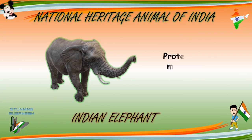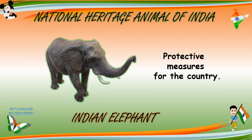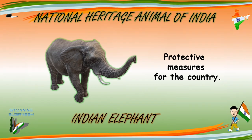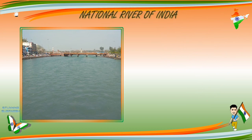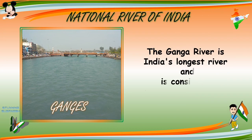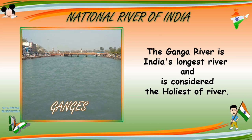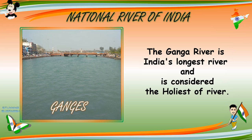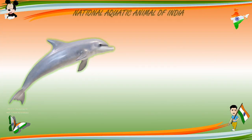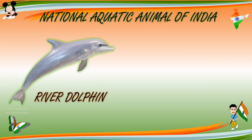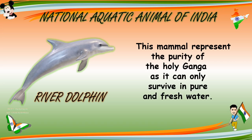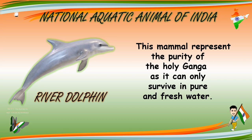National Heritage Animal of India — Indian Elephant, noted for protective measures for the country. National River of India — Ganges. The Ganga River is India's longest river and is considered the holiest of rivers. National Aquatic Animal of India — River Dolphin. This mammal represents the purity of the Holy Ganga as it can only survive in pure and fresh water.